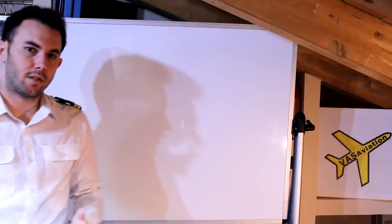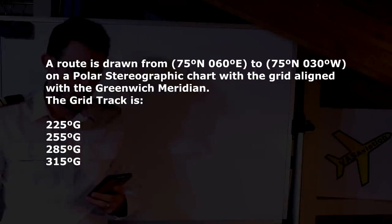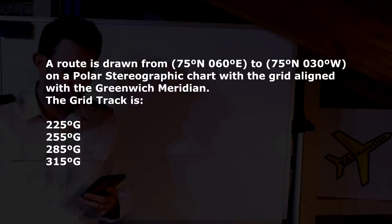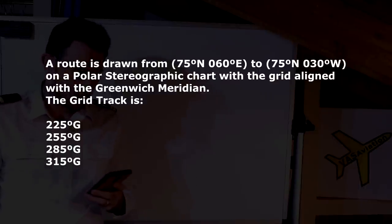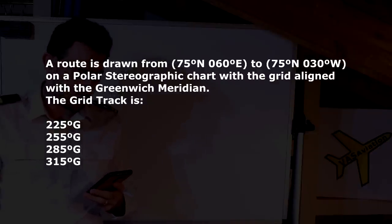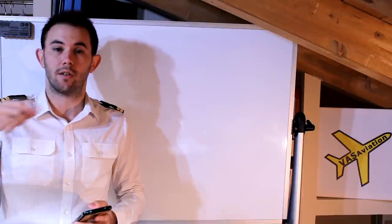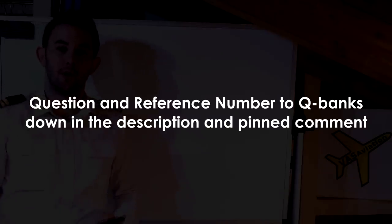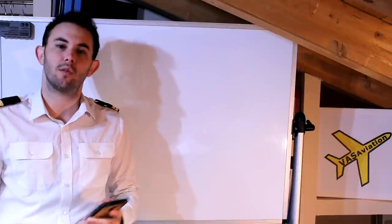So this is the question and the exercise that we're going to do today. A route is drawn from 75 degrees north, 60 degrees east to 75 degrees north, 30 degrees west on a polar stereographic chart with a grid aligned with the Greenwich meridian. The grid track is: 225 degrees grid, 255 degrees grid, 285 degrees grid, or 315 degrees grid. You have the reference number for this question for the different question banks down here, so you can easily go to the question.